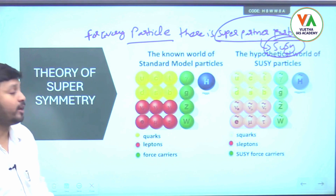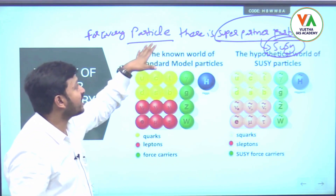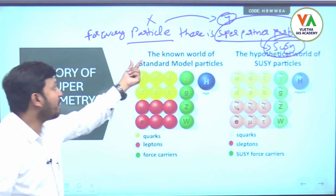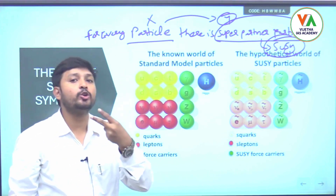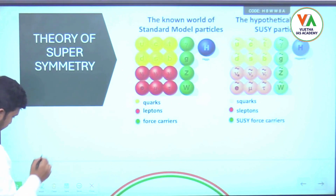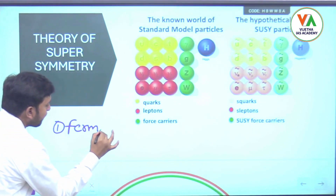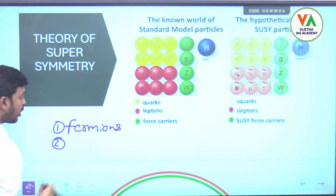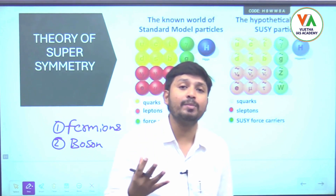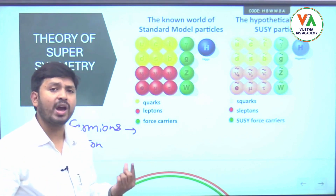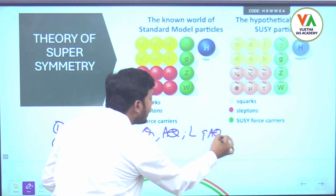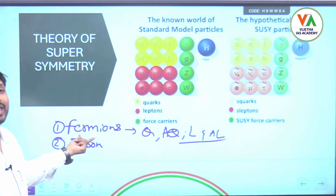According to the theory of supersymmetry, particles are divided into two groups. First group is called fermions, second group is called bosons. Bosons are force-carrying particles. Fermions include quarks, anti-quarks, leptons, and anti-leptons — all together are known as fermions.